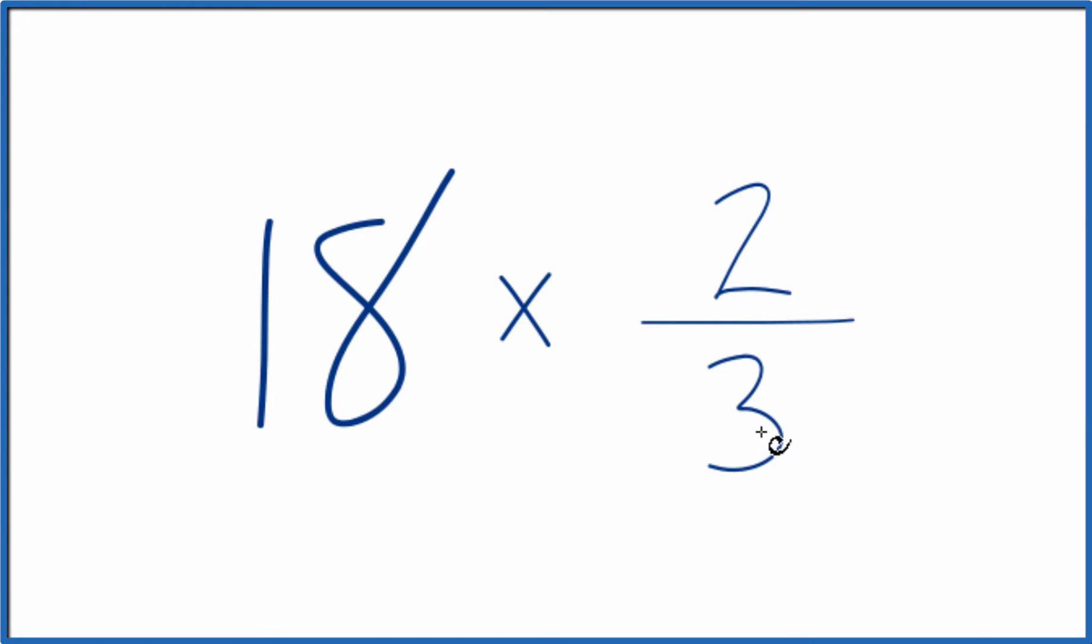You could take and add two-thirds together 18 times, and that would give you the correct answer for 18 times two-thirds.